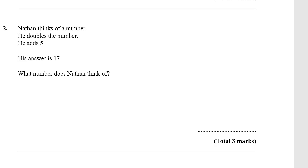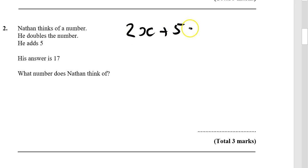Question two: Nathan thinks of a number, he doubles it, he adds five, and the answer is 17. So let's make that into an equation — he thinks of a number, he doubles it (times it by two), he adds five, and the answer is 17.